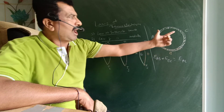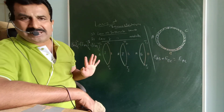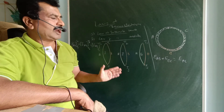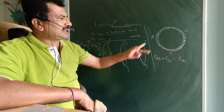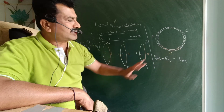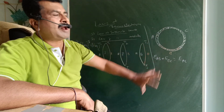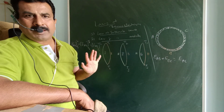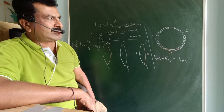This law states that the sum of the EMF produced by metals A and B in the thermocouple and metals B and C in the thermocouple is equal to the thermo EMF produced by metals A and C in the thermocouple. Therefore E_AB plus E_BC equals E_AC.